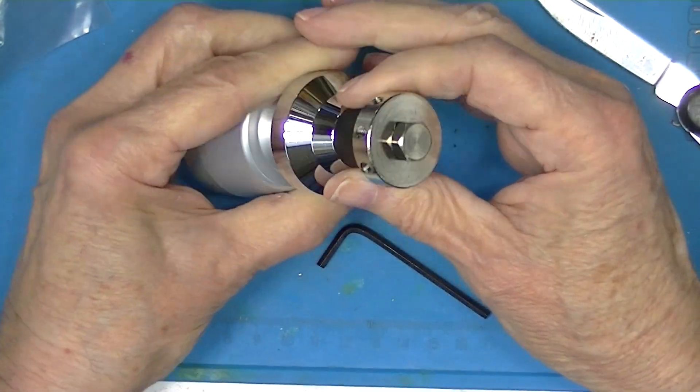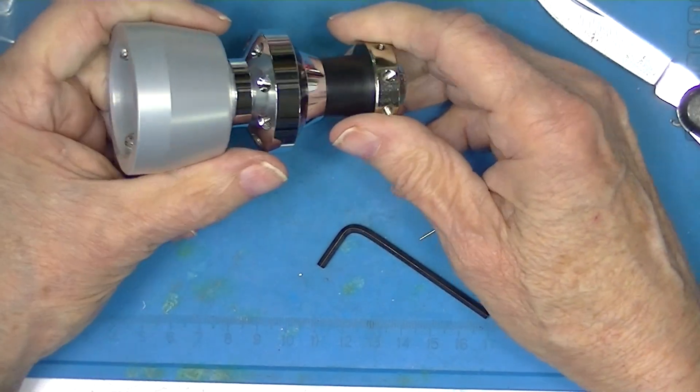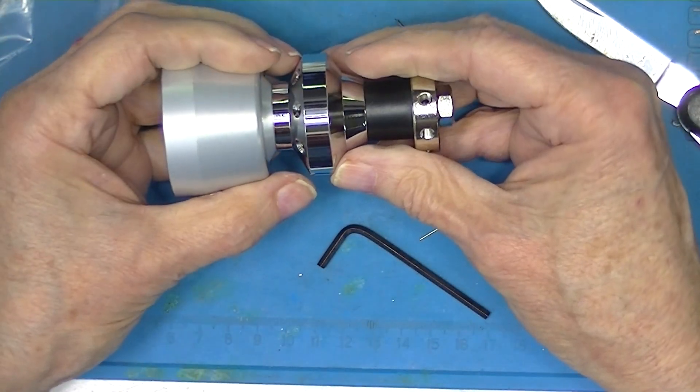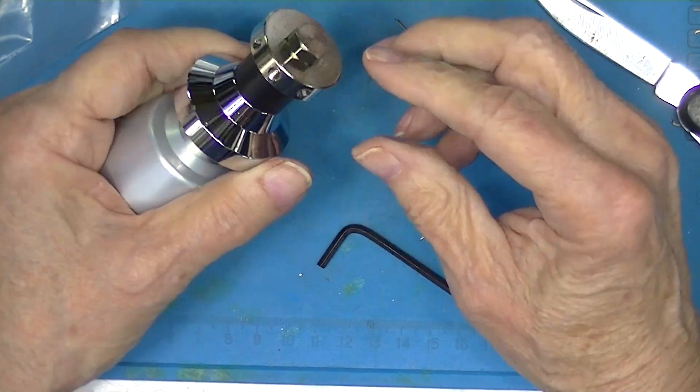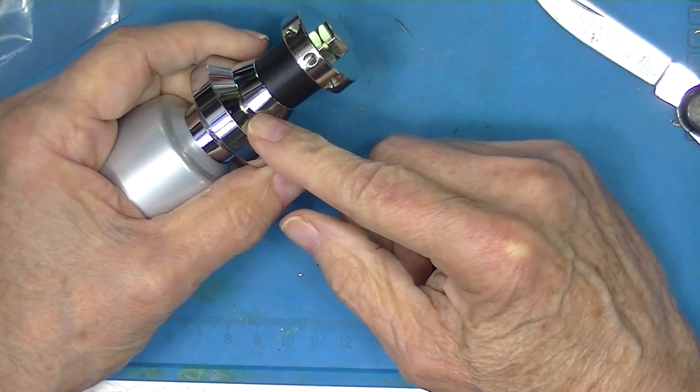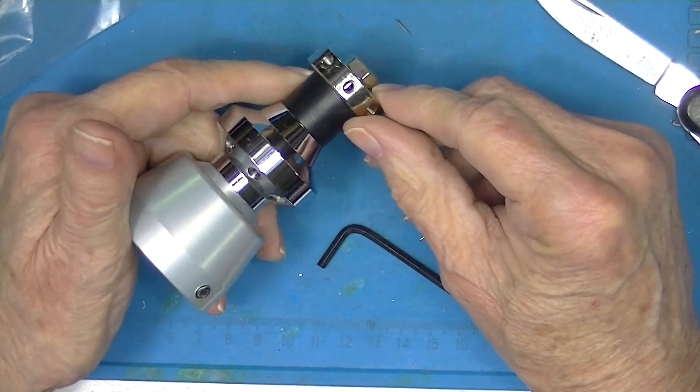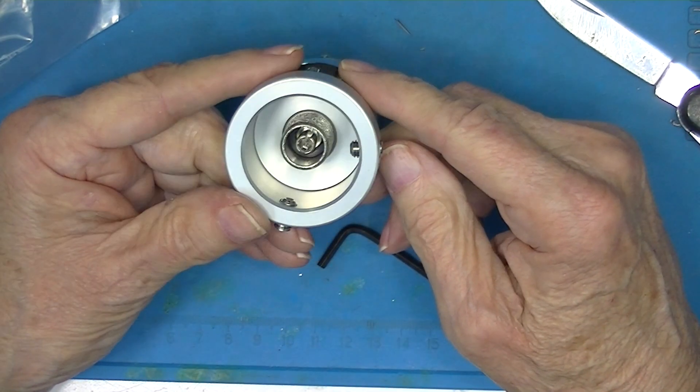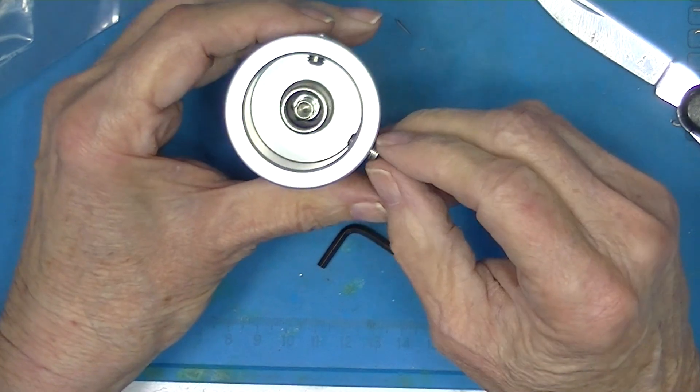Then we have this very nicely made chunk of aluminum. I guess this is steel and steel. There's two set screws here.